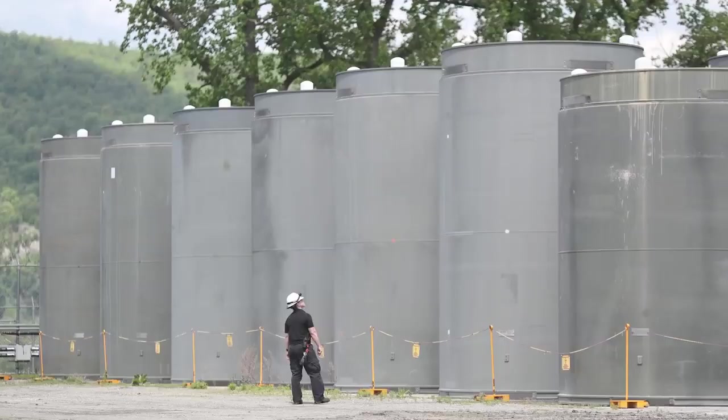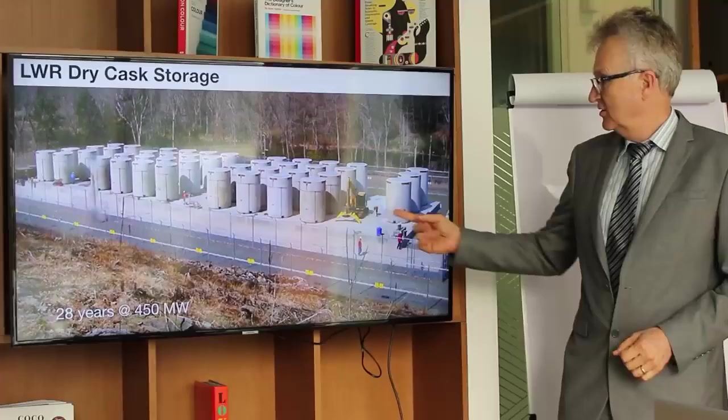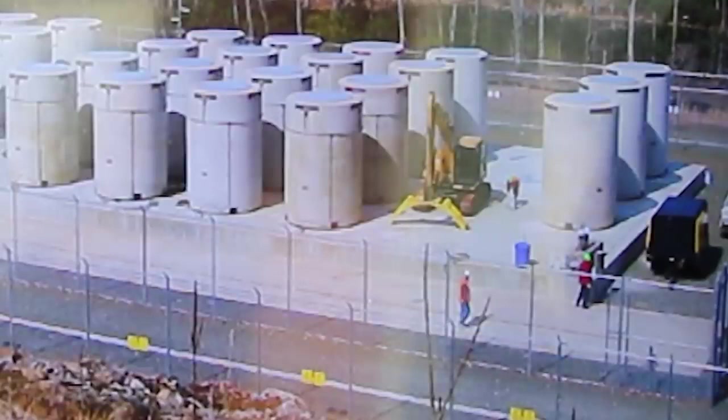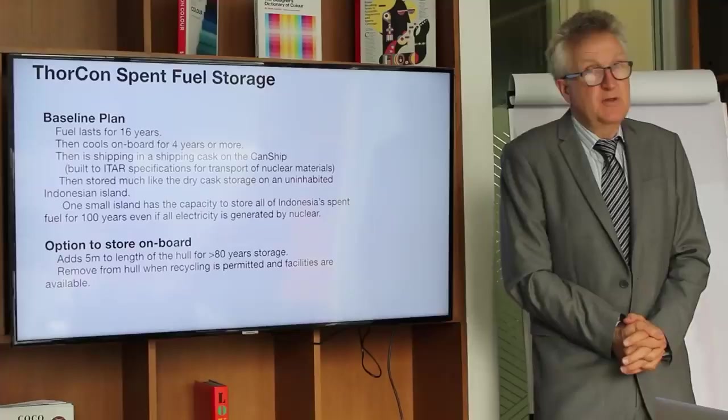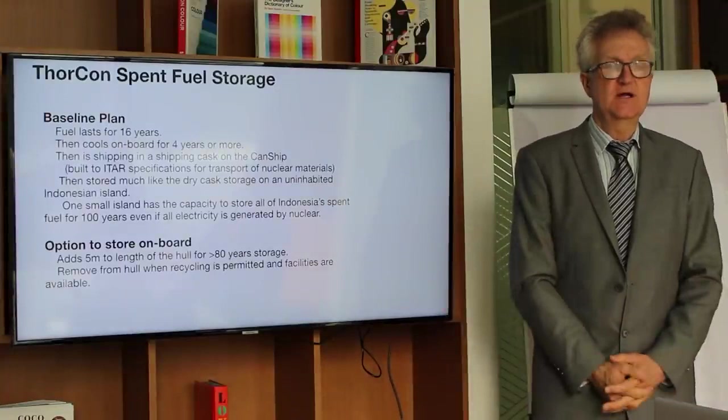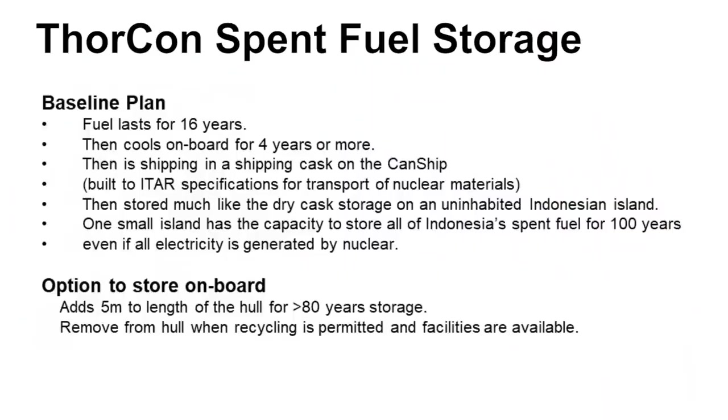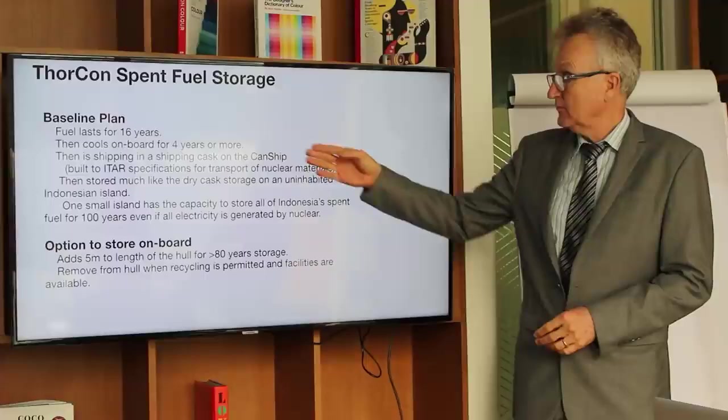We've never had a problem with nuclear waste. This is all the waste from a light water reactor, 28 years at 450 megawatts. And you can see people standing here. It's not a radiation area, just air-cooled. They're basically just sitting there in a parking lot. The plan is that this is Batan's responsibility, and they will find an uninhabited island, and that will provide enough storage to let you store all of the waste from all the nuclear power plants if you used only nuclear power for generating your electricity for the next 100 years. That is a baseline plant, so the fuel lasts in the plant for 16 years. It cools on board for at least four, maybe up to 12 years more before we try to ship it. We put it into a special shipping cask, and we put that on the can ship, and we take it to wherever that storage site is.